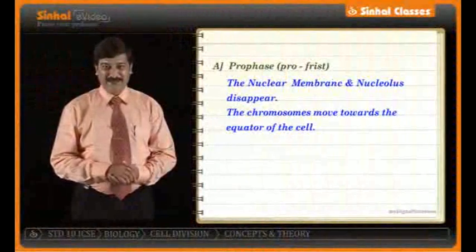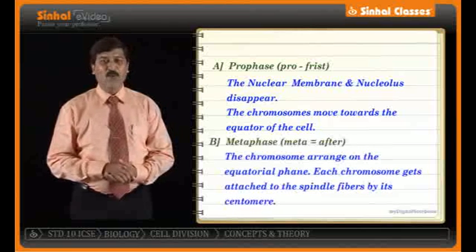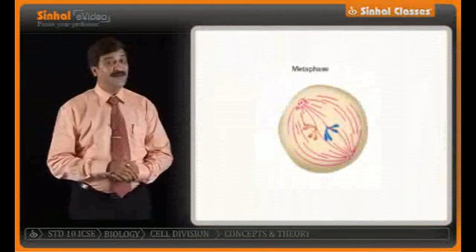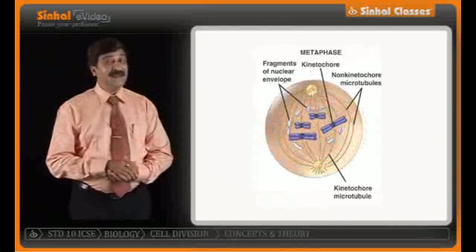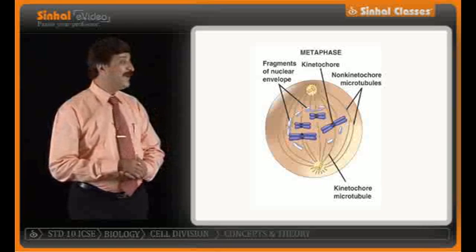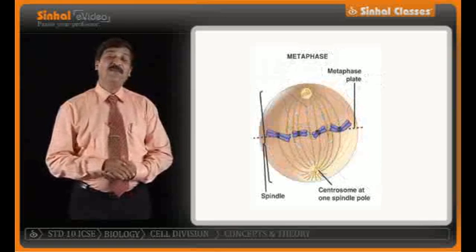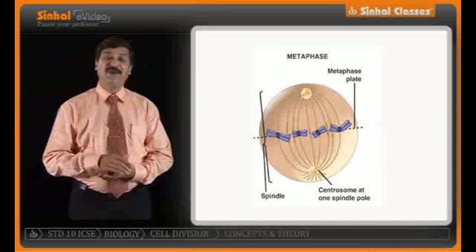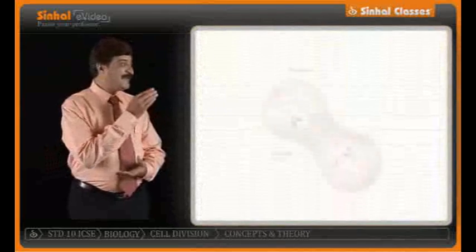The second phase is metaphase — 'meta' meaning after. In metaphase, the chromosomes are arranged on the equatorial plane. They get attached to the spindle fibers with the help of the centromere. This position of the chromosomes can be distinctly seen in the equatorial region.